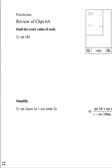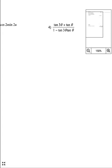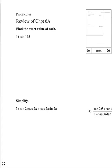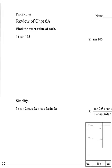Find the exact value of each. This one is sine of 165 degrees. We don't know sine of 165 degrees — this would be on a non-calculator part of the test. So we need to break this angle up into two different values.